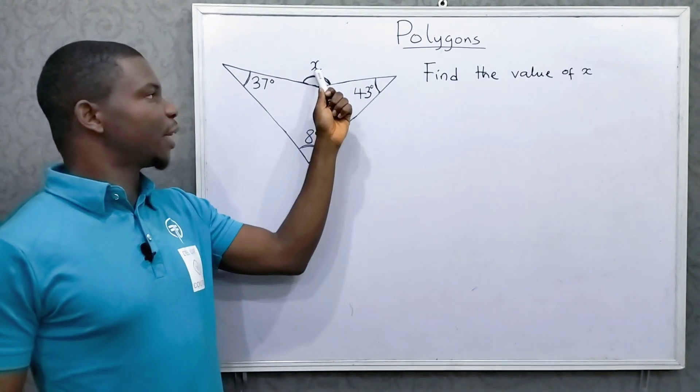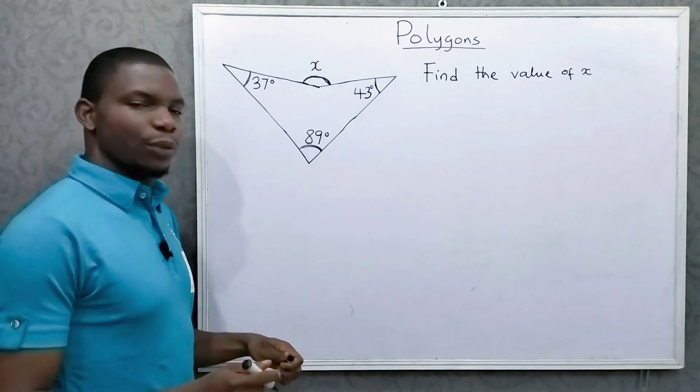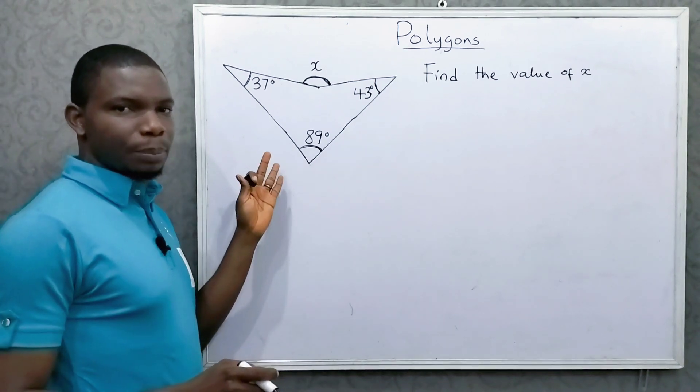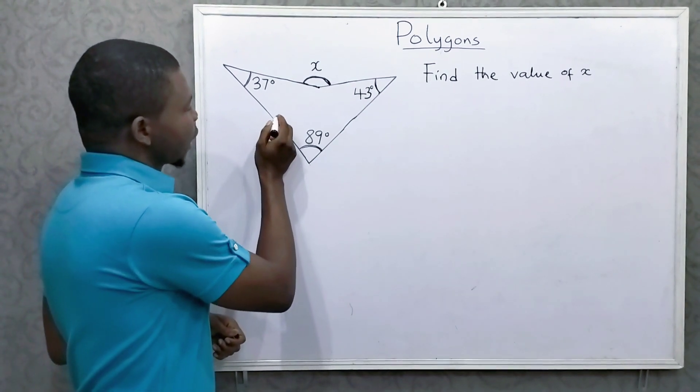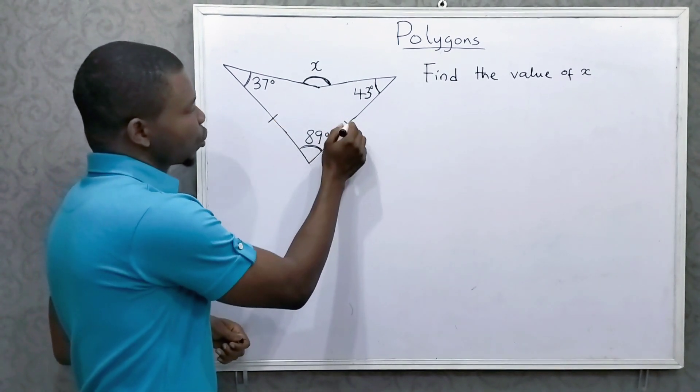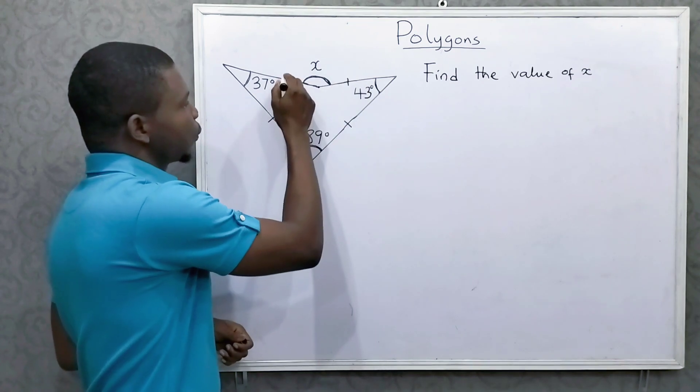So we want to look for this angle here. Now, first of all, you need to know what kind of shape you are dealing with. Let's count the number of sides. This is 1, 2, 3, 4.